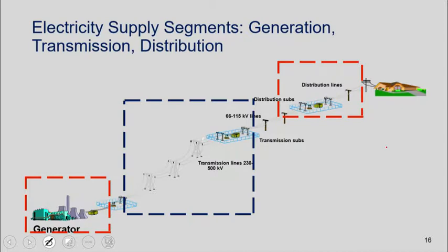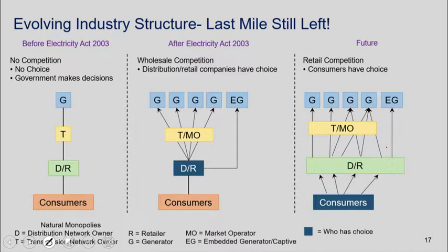The power sector is fascinating because it raises a number of conceptual issues about how we should approach it. Broadly, in power there are three stages to the process: generation, transmission, and distribution — each with its own rich set of issues. Before 2003 we basically had a government monopoly in generation, a government monopoly in transmission, and a government monopoly in distribution. That's how we began.